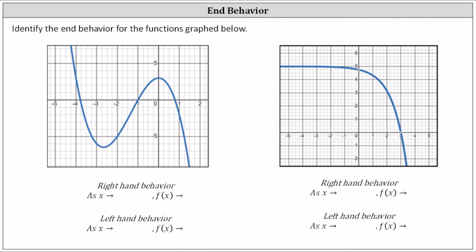For right-hand behavior, x is always approaching positive infinity, or we could think of x as moving to the right. Left-hand end behavior describes the y value or function value the graph is approaching as x decreases without bound and approaches negative infinity, meaning x is moving to the left.